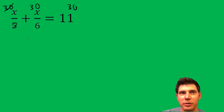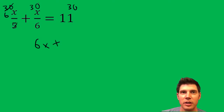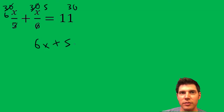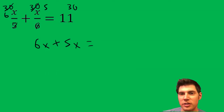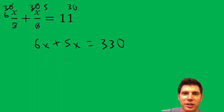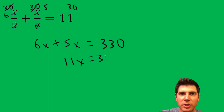What happens is this 30 reduces with the 5 to give you a 6, so it's going to be 6x. And then this 30 reduces with the 6 to give you a 5. So it's 5x equals, and this is going to be 11 times 30, which is 330. So now combine like terms on the left-hand side. You get 11x equals 330.